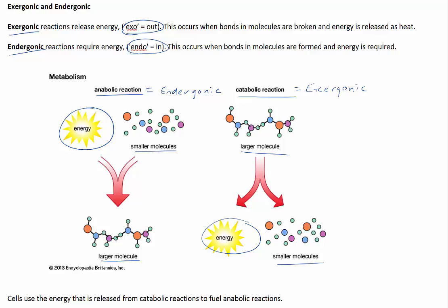In summary, organisms rely on biochemical processes to live. These biochemical processes occur in a series of steps and generally have inputs and outputs. A set of biochemical reactions that occur in a cell is called cellular metabolism. Enzymes are responsible for controlling the rate, type, and duration of biochemical processes. Biochemical processes that break down complex molecules into smaller ones are referred to as catabolic reactions, and those that synthesise complex molecules from simple molecules are referred to as anabolic reactions. Exergonic reactions release energy when bonds in molecules are broken, and endergonic reactions require energy when bonds in molecules are formed.